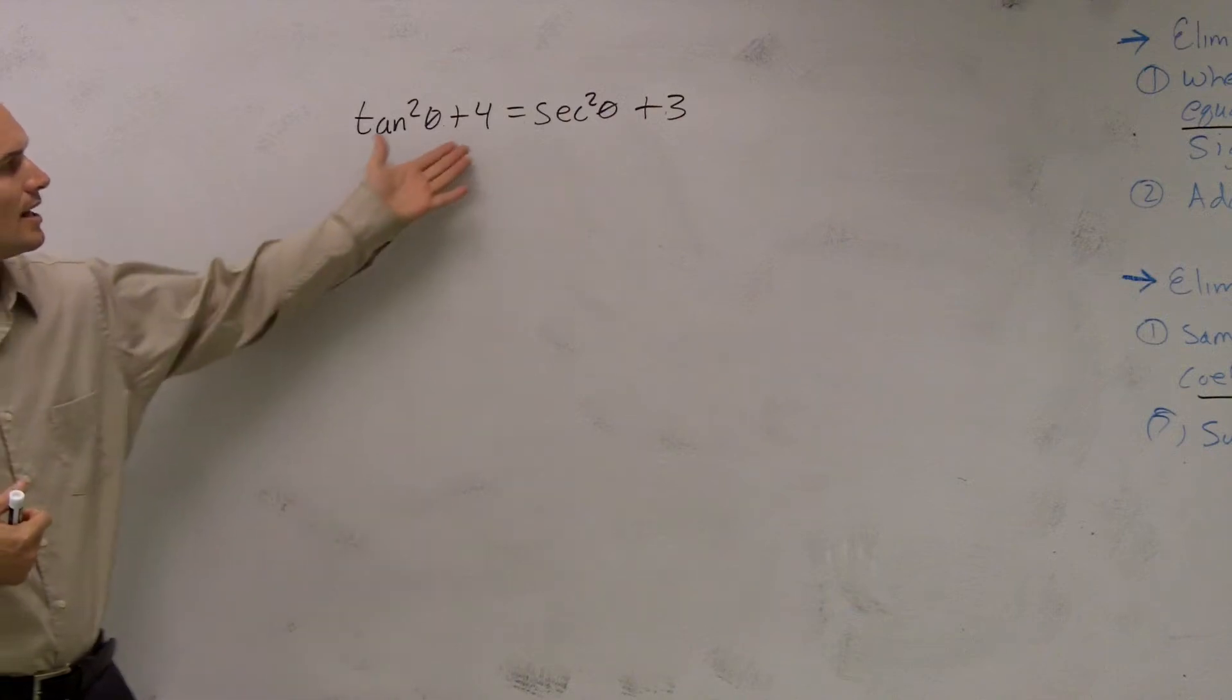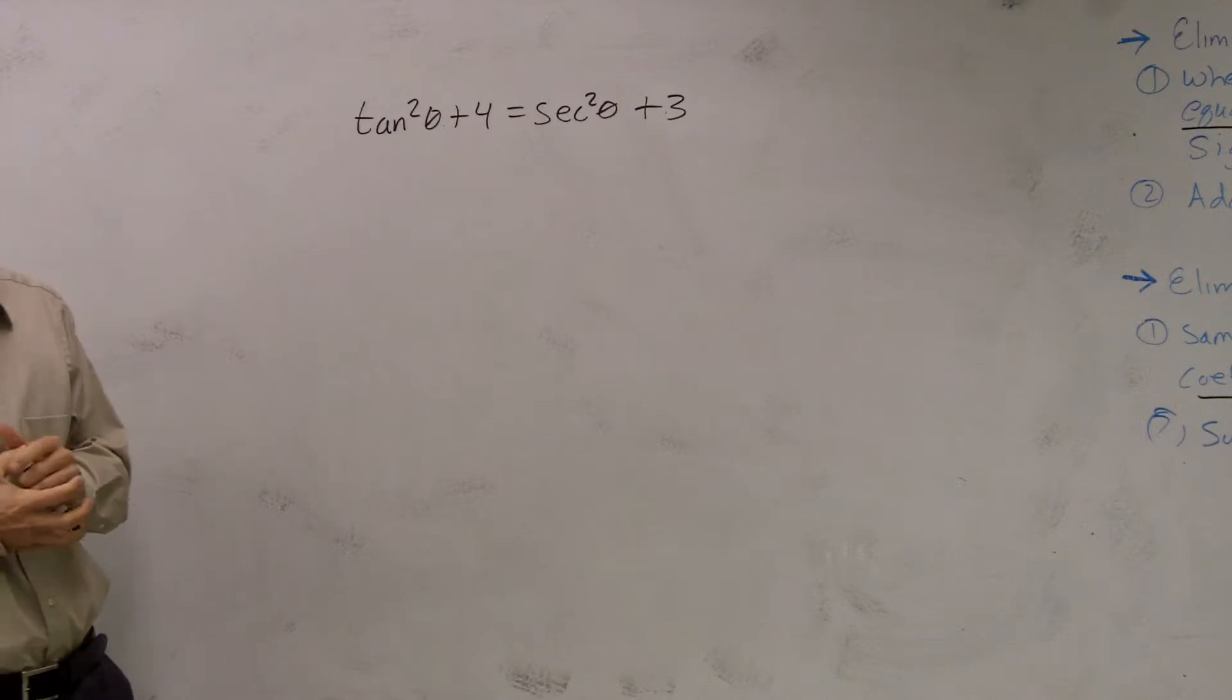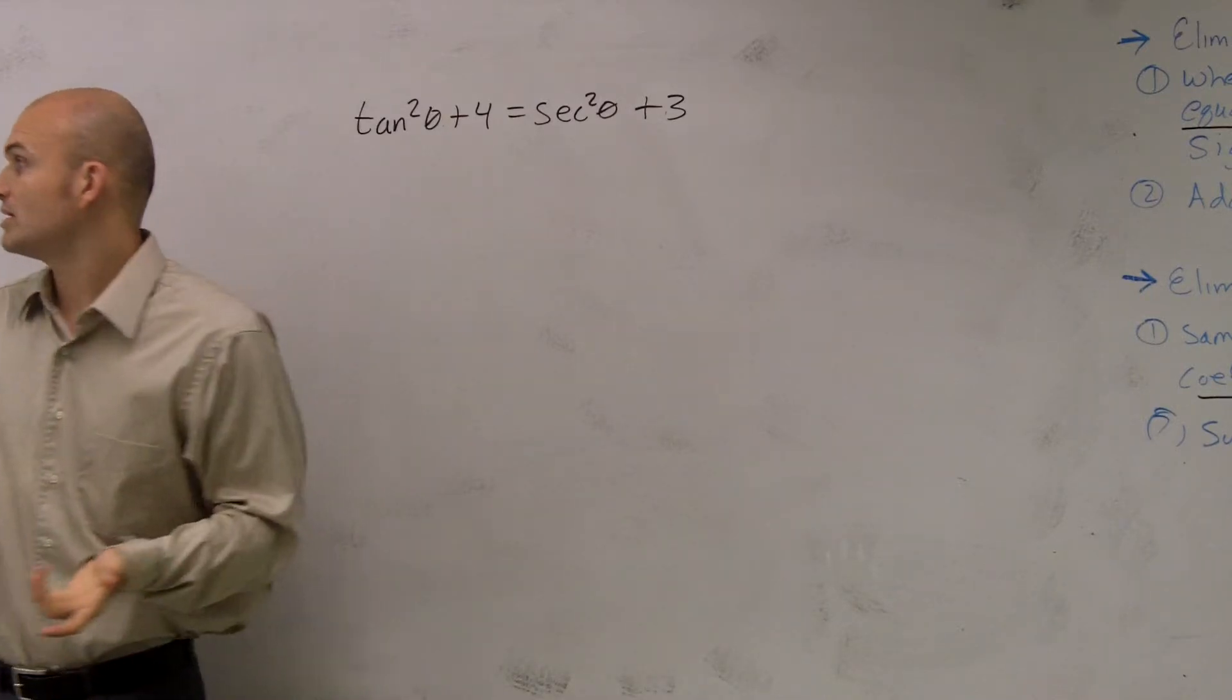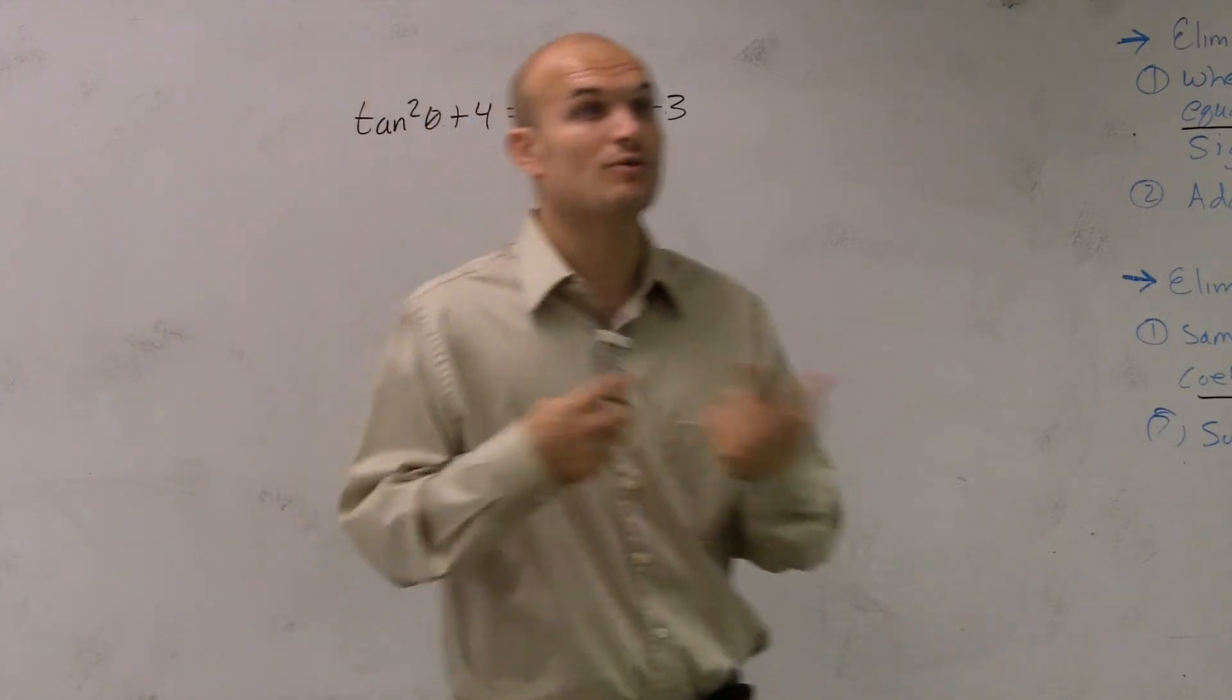Well, here, I can't add these. They're not like terms. But I do know that tangent squared and the secant squared, with our Pythagorean identities, we can actually rewrite them, correct?